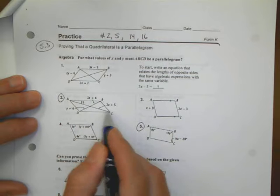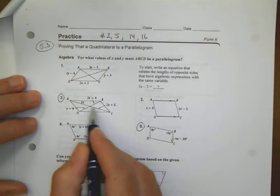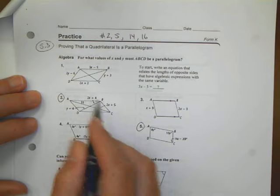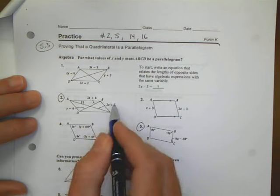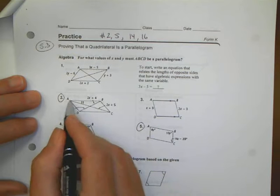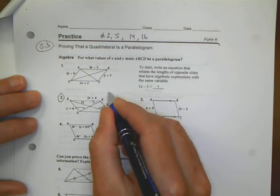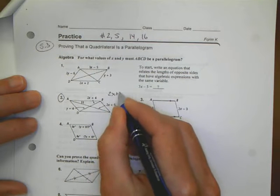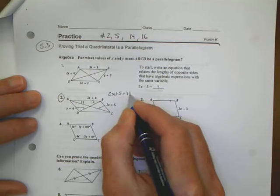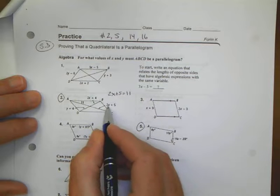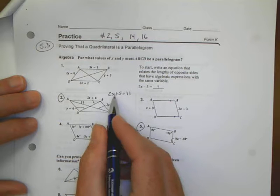I know that when I have a diagonal line of a parallelogram, the two parts, the corresponding parts, are going to be equal to each other. One of the things I noticed is that if I look at this line AC, I could set an equation that would equal 2x plus 5 equals 11. By making this equation happen right away, I like it because there's only one variable in that equation, just the x.